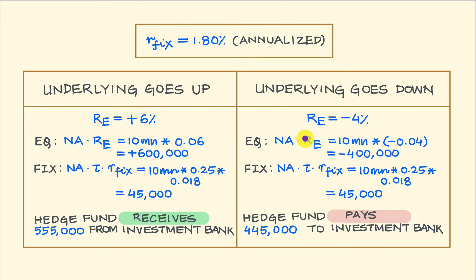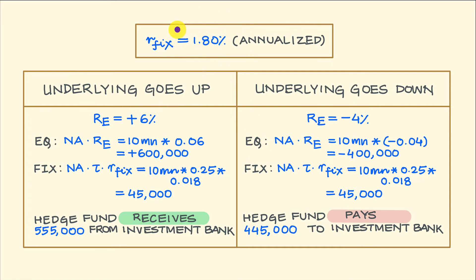It's the investment bank which purchased these shares, and these shares are sitting on the balance sheet of the investment bank. In some sense, this hedge fund is renting the balance sheet of this investment bank, and in return, periodically, it's paying a fee which is calculated at the rate of 1.8% per annum.